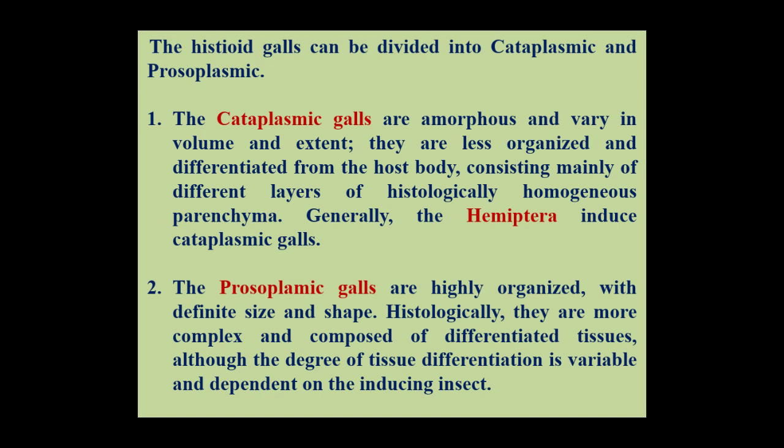The histoid galls can further be divided into two types: cetaplasmic galls and prozoplasmic galls. The cetaplasmic galls are amorphous and they vary in their volume and extent. These cetaplasmic galls are less organized and differentiated from the host body. They consist mainly of different layers of histologically homogenous parenchyma.